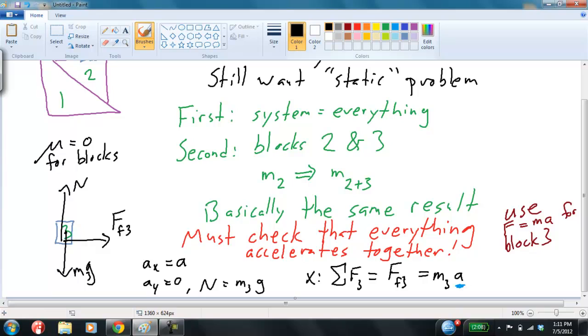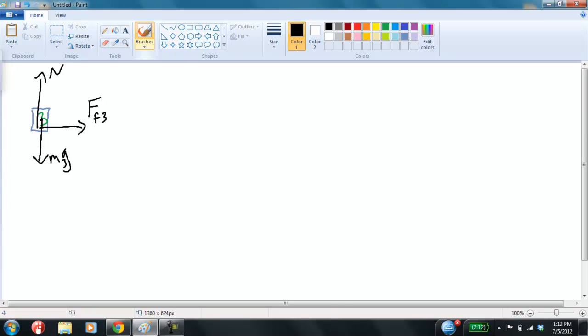And, F3 has to equal M3 times A, and this is the same as the A all throughout the problem. Right? So, and then I can work out from, so now I know that I have static friction, right? Okay. So, F3 better be less than or equal to mu three, mu static, okay. And times the normal force on three, and we already solved for that, that's M3G.